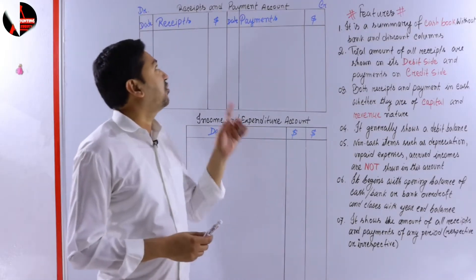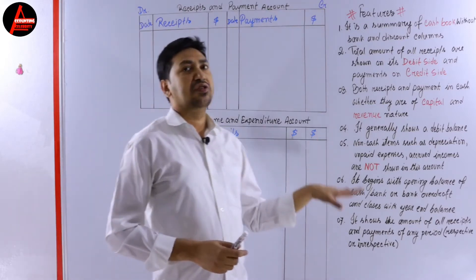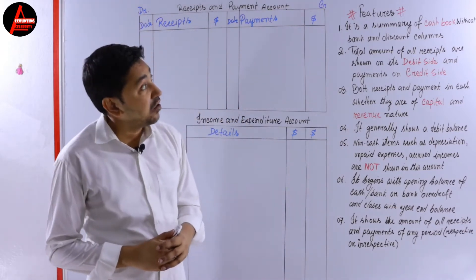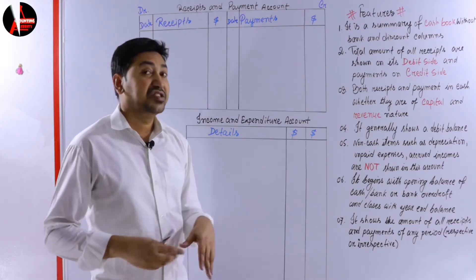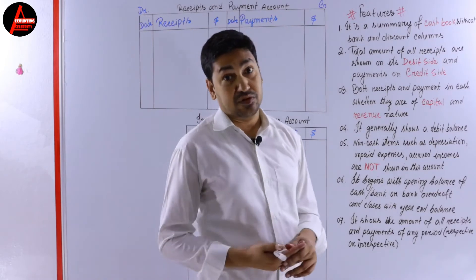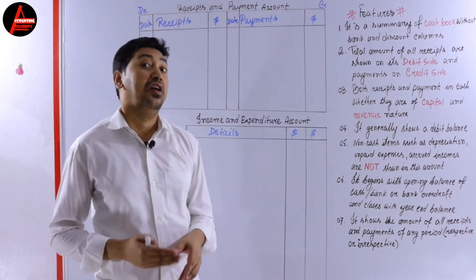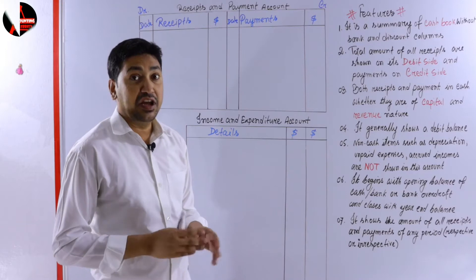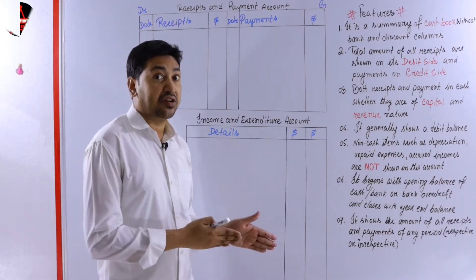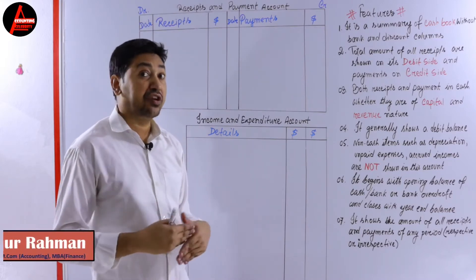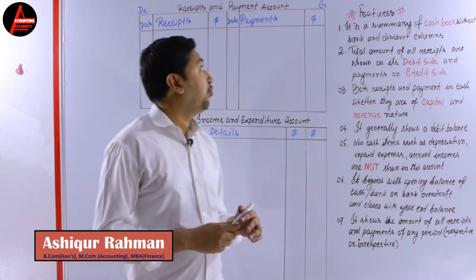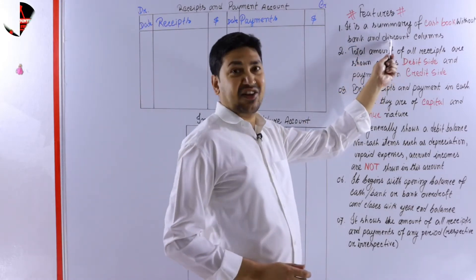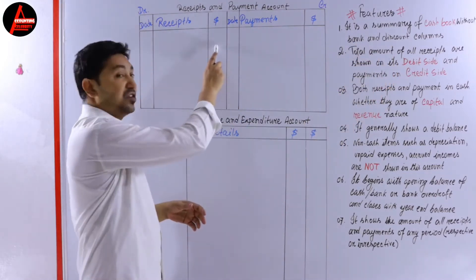Before we start preparing the receipt and payment account we need to know some features of this account. First one is it is a summary of cash book without bank and discount columns. I have a video on cash book and I'll link to it in the description. In the cash book there are three columns on the debit side - cash, bank and discount - same three columns in the credit side. But in the receipt and payment account it is just like cash book format but there is no bank and discount column.